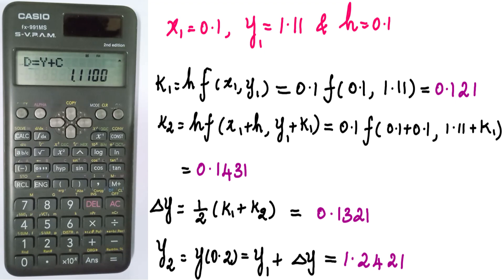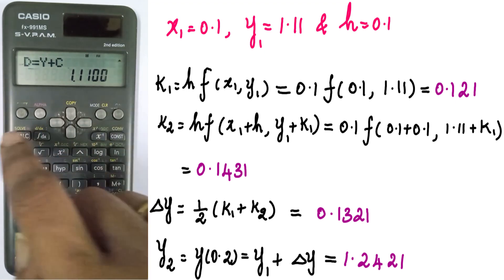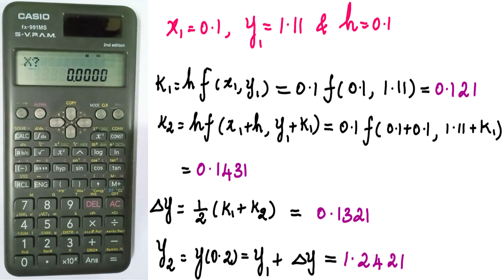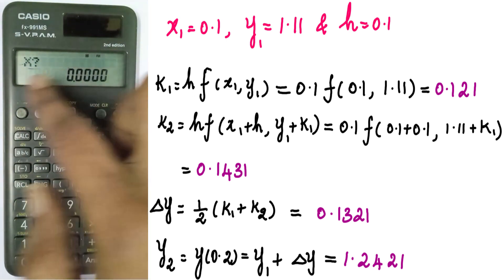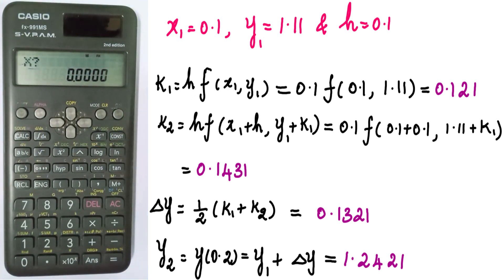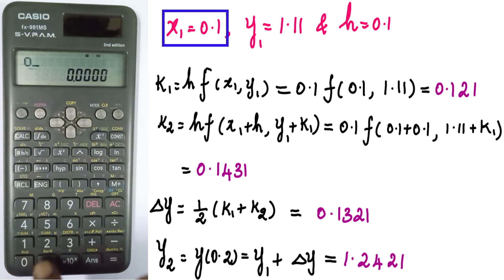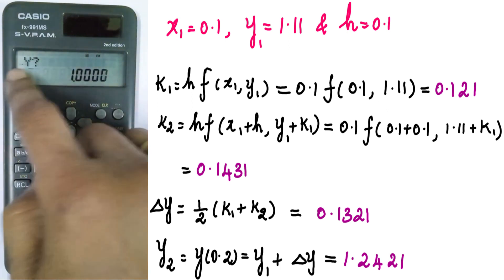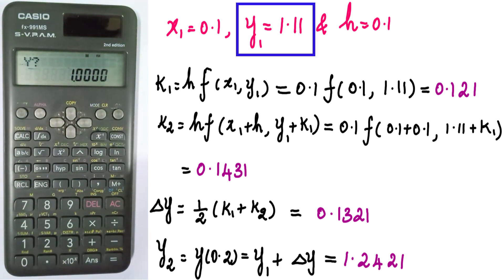At the second step, we calculate y₂. We have the four values from step one. Press the button and enter x = x₁ = 0.1. Then enter y = y₁ = 1.11. Execute the four formulas again to obtain y₂, which is y(0.2).